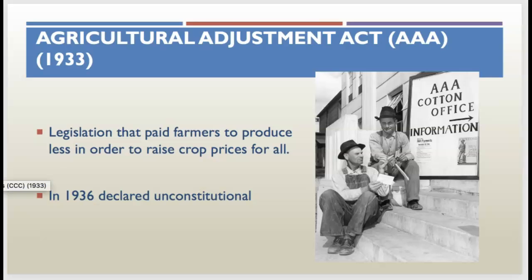We'll talk about the challenges to the New Deal later when we discuss the second New Deal, but for now keep in mind we've had two pieces of legislation that the Supreme Court has ruled unconstitutional — the NRA and the AAA.